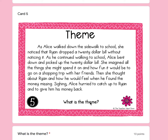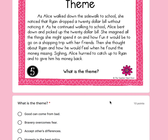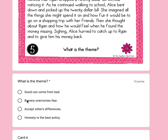Number five: As Alice walked down the sidewalk to school, she noticed that Ryan dropped a $20 bill without noticing it. As he continued walking, Alice bent down and picked up the $20 bill. She imagined all the things she might spend it on and how fun a shopping trip with her friends would be. Then she thought about Ryan and how he would feel when he found the money missing. Sighing, Alice hurried to catch up to Ryan and give him his money back. What is the theme? A, good can come from bad. B, bravery overcomes fear. C, accept others' differences. Or D, honesty is the best policy — like being honest and truthful. What did Alice learn?